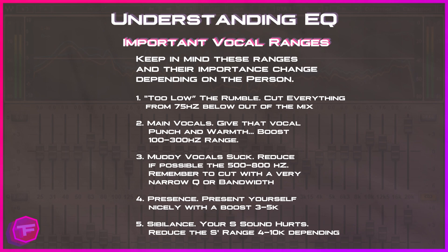Most people's main vocal comes in around the punch and warmth area — generally you want to boost the 100 to 300 Hz range. Muddiness is a very real problem when processing vocal audio; if possible without damaging the vocals, reduce the 500 to 800 Hz range using a narrow Q — Q stands for bandwidth. For presence, you generally want to boost the 3 to 5k range. And finally, sibilance — the S sounds — generally should be cut or reduced so it's not so ear-piercing.